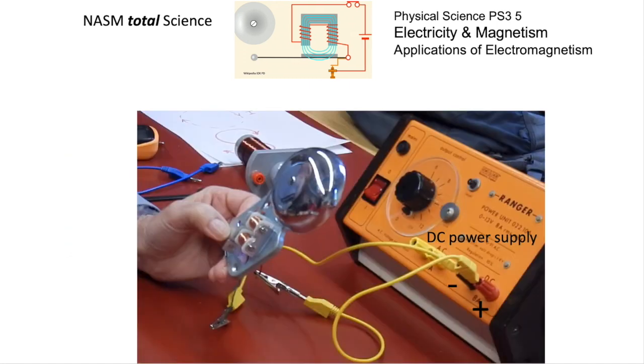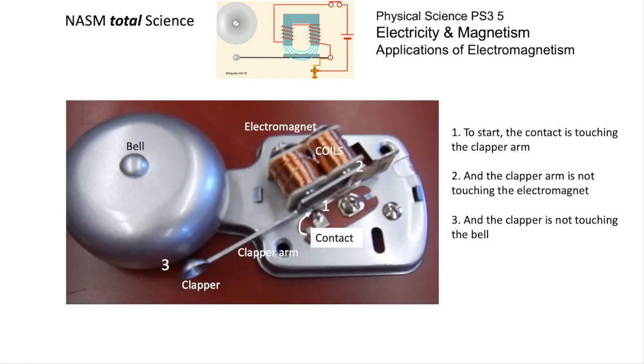Here it is in the circuit with a DC power supply. To start with, the contact that you can see there, number one, is actually touching the clapper arm. The clapper arm isn't touching the electromagnet at number two—it's pretty close but it's not touching—and the clapper isn't touching the bell at three, so no noise at this stage.